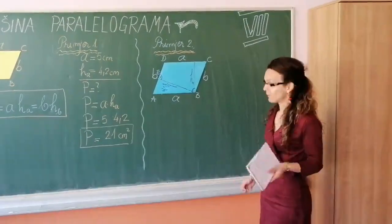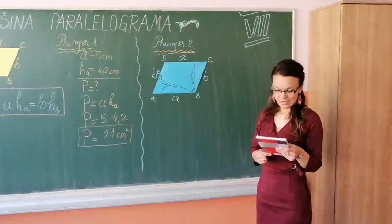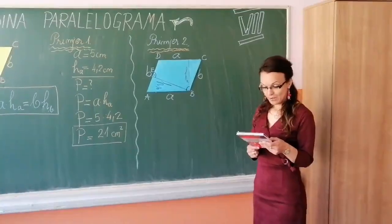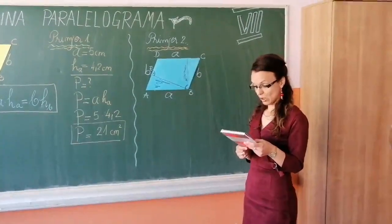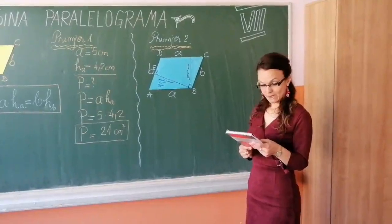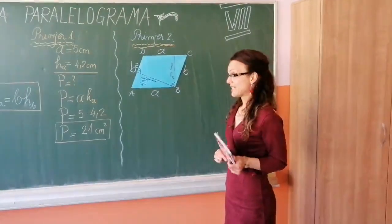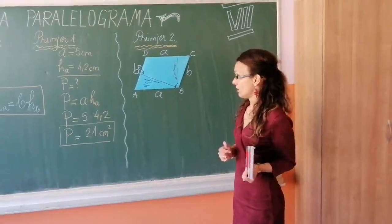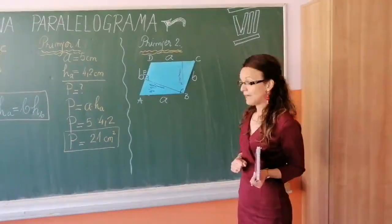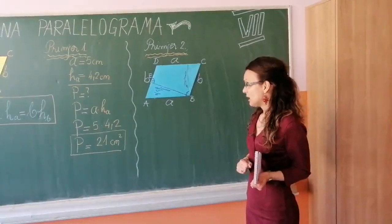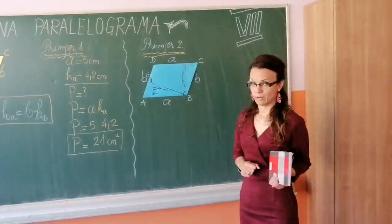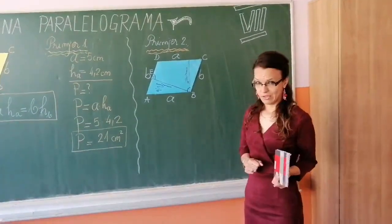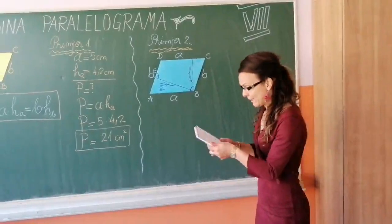Odradimo još jedan primjer koji dolazi. Dvije susjedne stranice paralelograma su 12 centimetara i 16 centimetara. Prvoj stranici odgovara visina dužine 8 centimetara, i odrediti visinu koja odgovara drugoj stranici. Evo upravo primjera koji odgovara mojoj priči na početku. Nekada ćemo imati zadatak gdje ćemo imati par elemenata koji tiče jednu i njoj odgovarajuću stranicu i drugu i njoj odgovarajuću stranicu. Pa hajdemo za početak ispisati elemente sa kojima raspolažemo.